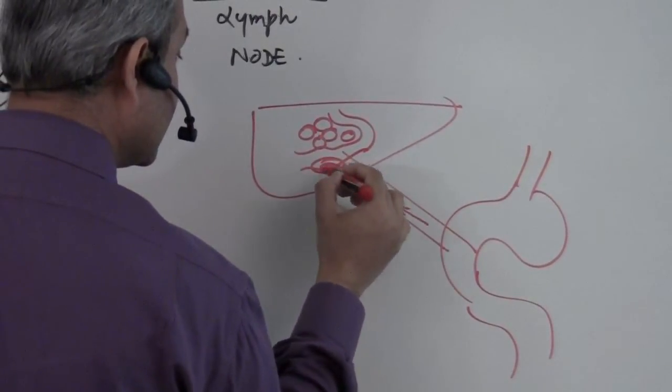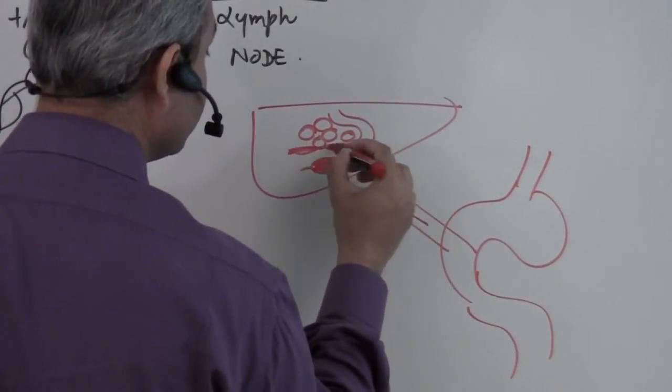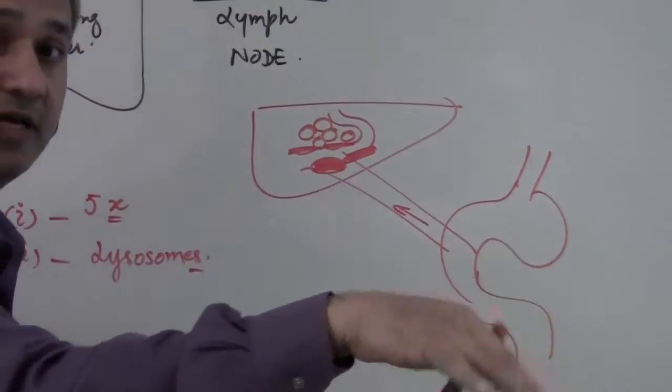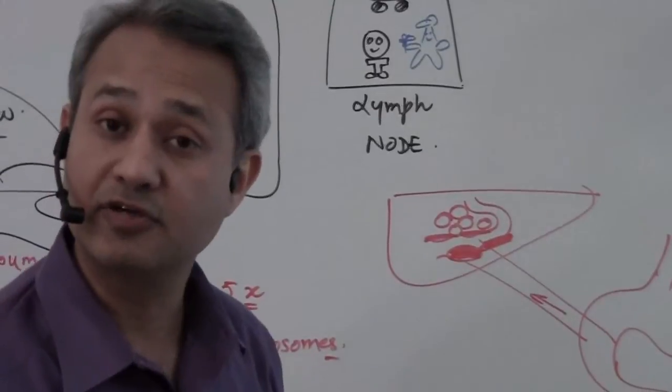Macrophages are sitting here along the liver sinuses. What are they doing? They are sitting there and they are looking for pathogens coming from the GIT. What are they going to do? They are going to phagocytose them.